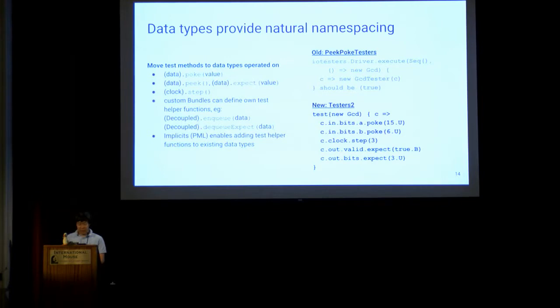As far as namespacing, data types provide a natural namespace. So instead of poking a data type, we could have poke be a method on the data type itself. So it would be data.poke. This could be extended down to the rest of the API, including peak, expect, and step functions. So custom bundles like decoupled would be able to define their own methods like enqueue. And another bundle type defining enqueue would not alias. And Scala implicits further allow adding test helper methods to existing data types. So you don't actually have to dump your enqueue method in the base decoupled class.